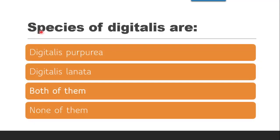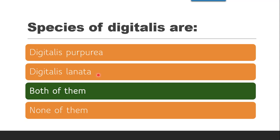The next question is: What are the species of digitalis? From a theory point of view this is very important — the species, the glycosides, and the hydrolysis of digitalis are all key topics. There are two species: Digitalis purpurea and Digitalis lanata. So the correct answer is both of them.